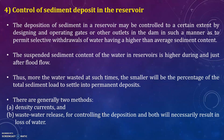The fourth method is control of sediment deposit in the reservoir. Deposition of sediment may be controlled by designing and operating gates or outlets in the dam to permit selective withdrawal of water having higher than average sediment content. The suspended sediment content is higher during and just after flood flow. The two general methods are density currents and wastewater release for controlling deposition, both of which necessarily result in some loss of water.